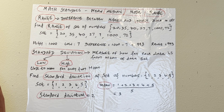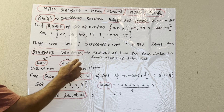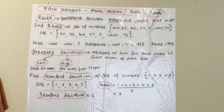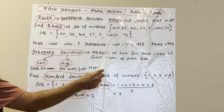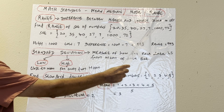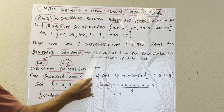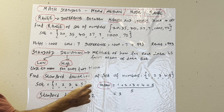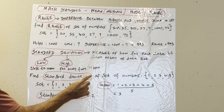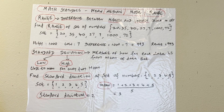The range of a set of numbers — what is the range? It's the difference between the highest and lowest data in a set. Find the range of this set of numbers: 20, 35, 40, 27, 70, 72. The highest number in the set is 1000, the lowest number in the set is 7. So we find the difference: 1000 minus 7 equals 993. So the range is 993.